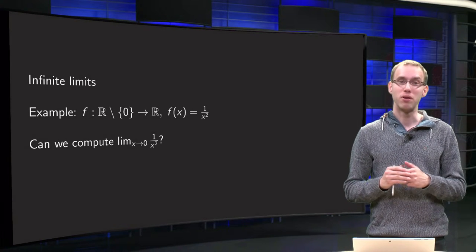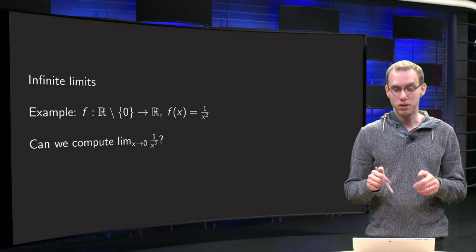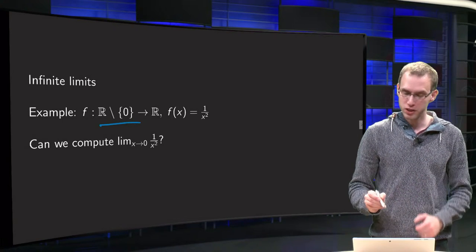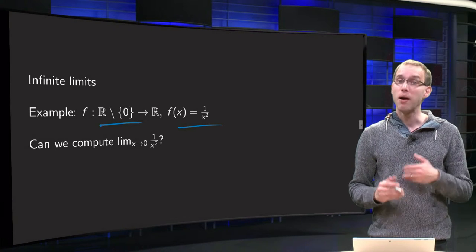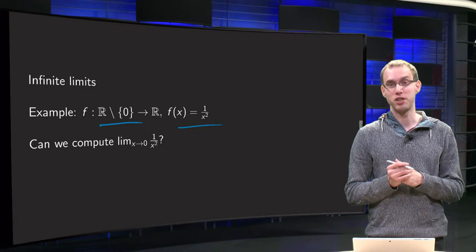Take our function f from R to R except zero, f of x equals 1 over x squared, and what happens if we take limit x to zero of 1 over x squared?